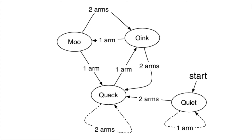Thank you all for playing along. I hope you got a feel for how we move between different states. So if I want to go from quiet to moo, it wouldn't be a direct state transition — I would have to do two arms to get to quack, one arm to get to oink, and one arm to get to moo. You can see the relationships between different states and the transitions required to achieve them.